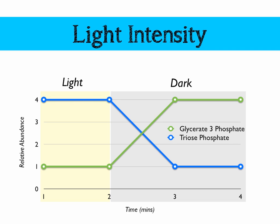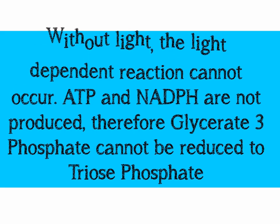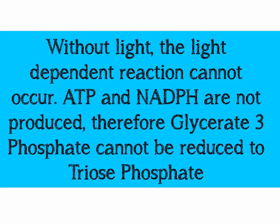So why does this happen? Without light, the light dependent reaction simply cannot occur, and the products of the light dependent reaction — that's ATP and NADPH — are not going to be produced. Therefore, glycerate-3-phosphate cannot be reduced to triose phosphate, because ATP provides the energy for the reduction and NADPH provides the reducing power — it acts as a reducing agent.